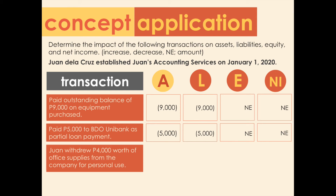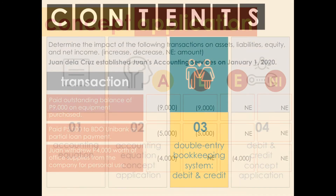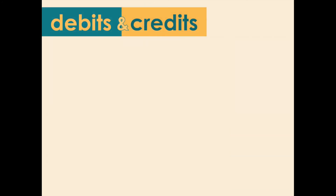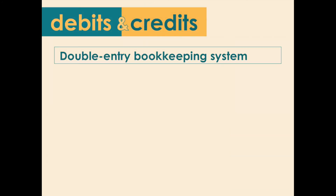Transaction nine: Juan withdrew 4,000 pesos worth of office supplies from the company for personal use. This decreases assets for the supplies withdrawn and decreases equity or capital — both by 4,000 pesos.